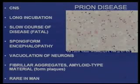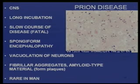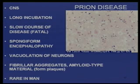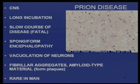The disease attacks primarily the central nervous system. It has a very long incubation period; once the disease develops, the course is months or even years. You get spongiform appearance in the brain, vacuolation of the neurons, fibrils, amyloid material, and plaques that stain with certain dyes. It's pretty rare in humans.